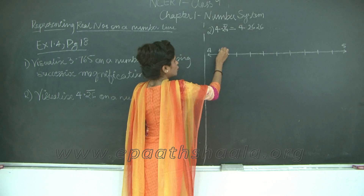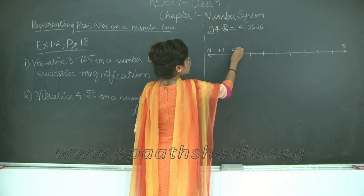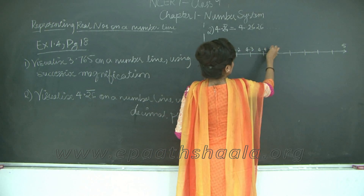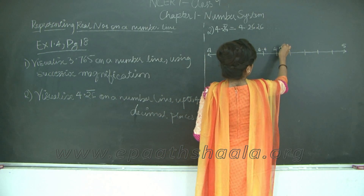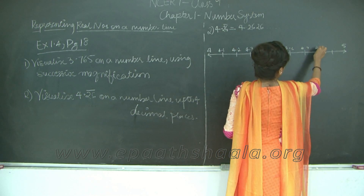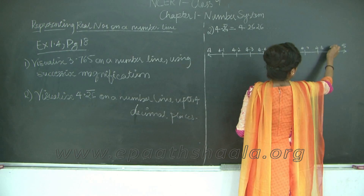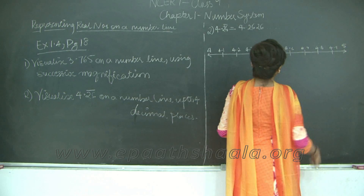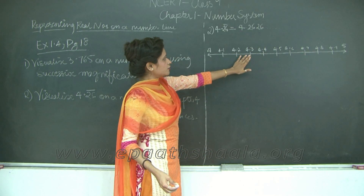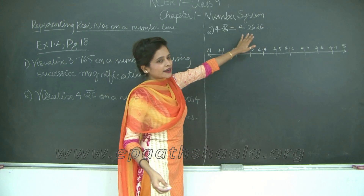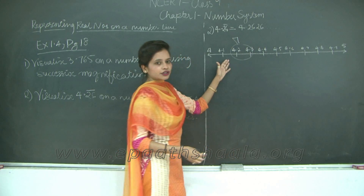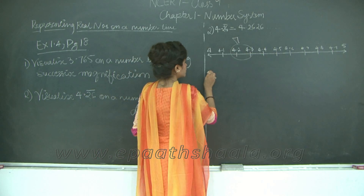So this gives us 4.1, 4.2, 4.3, 4.4, 4.5, 4.6, 4.7, 4.8, 4.9, and finally 5. I need 4.2, so I am going to further magnify the section between 4.2 and 4.3 in order to find the remaining numbers. This is my magnifying glass — I am going to further magnify it and draw a second number line.